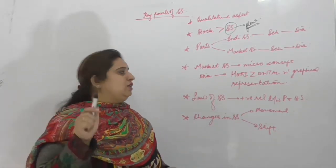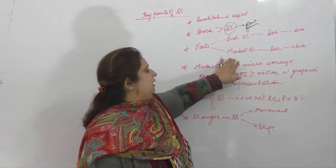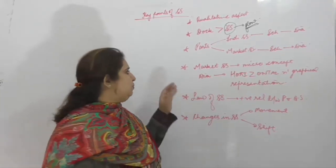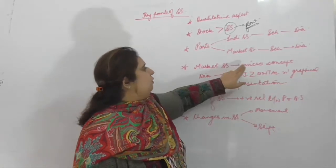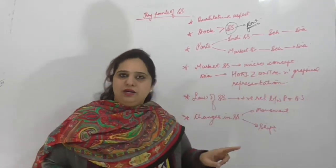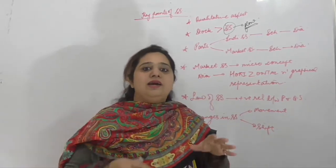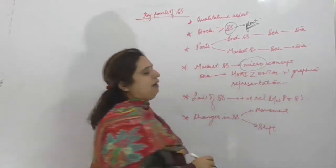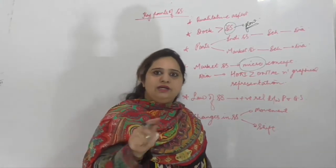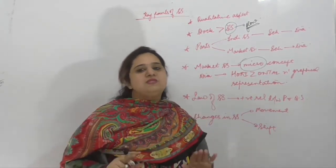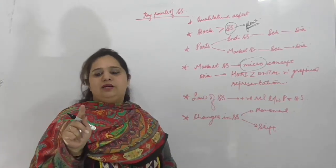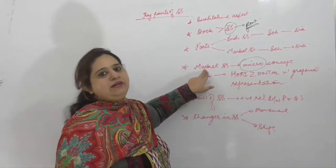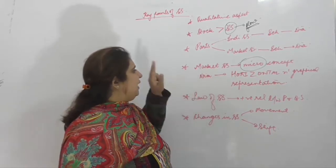Market supply के लिए याद रखें: only two producing firms are there in the market. Next important point — market supply जब करते हो, याद रखो यह micro concept है, macro नहीं। Market सोचकर यह मत सोच लेना कि यह macro concept बन गया — that is wrong. यह micro concept है क्योंकि एक ही commodity की supply कर रही हैं सारी firms in the market।